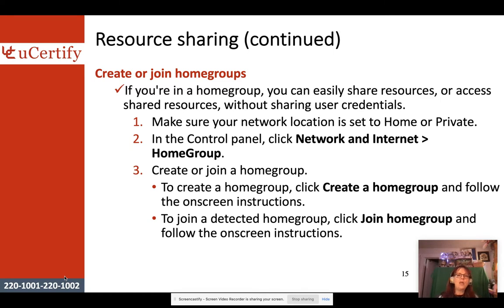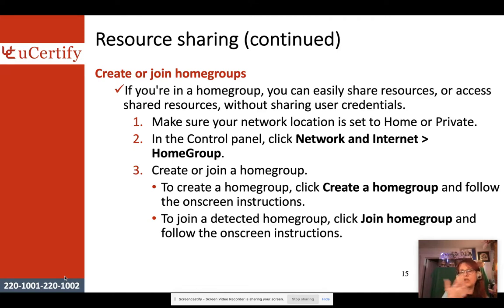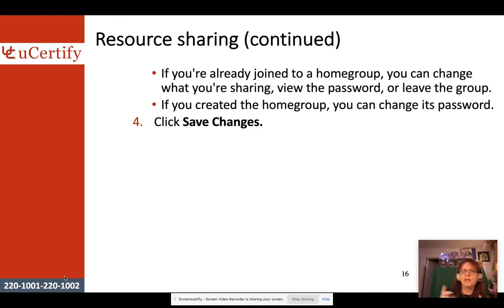To create or join a home group, first make sure your network location is set to Home or Private, then go to Network and Internet > Home Group. To create one, run the Create a Home Group wizard and set a passcode to share with others on your network. To join an existing home group, follow the onscreen instructions — Windows will detect the home group on your network, then enter the password, select what you want to share, save changes, and you're done.